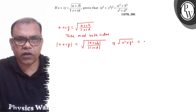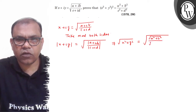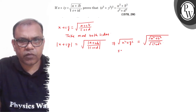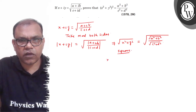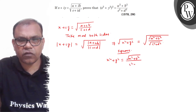Aur joh right hand side ajaega, it will be under root of a square plus b square, iska under root divided by under root of c square plus d square. So we have: x square plus y square equals a square plus b square upon c square plus d square, iska root.